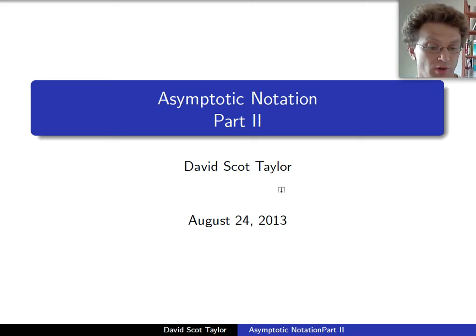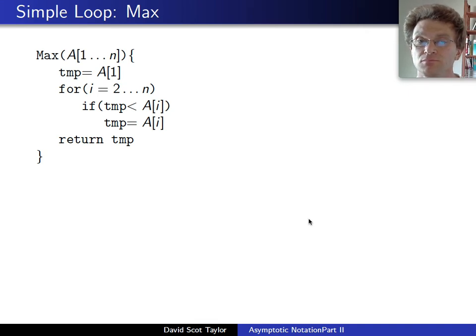So to continue with our asymptotic notation, we're going to actually analyze a couple simple algorithms here. Here we've got an algorithm which loops through some array and returns the largest value in the array.